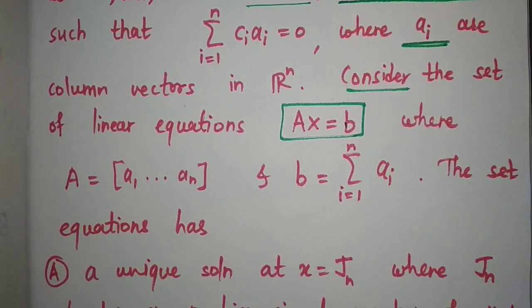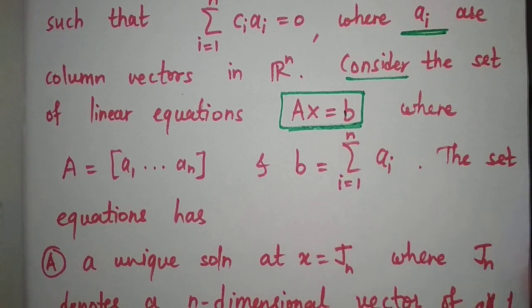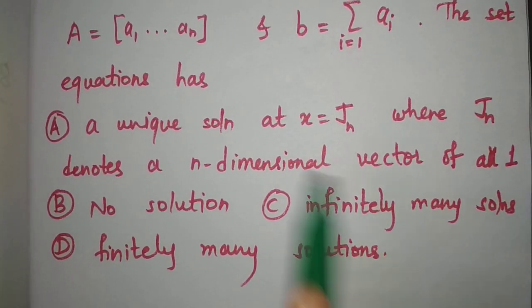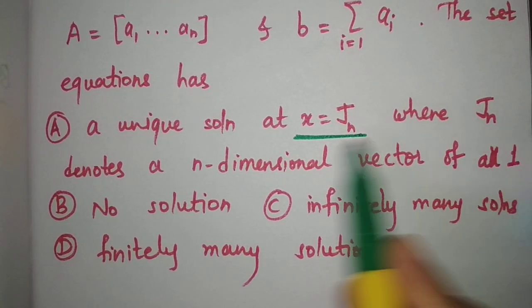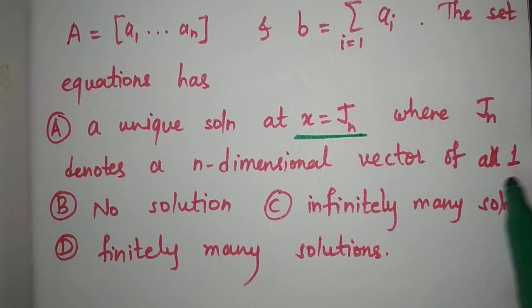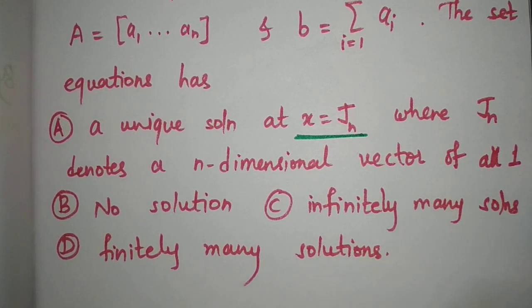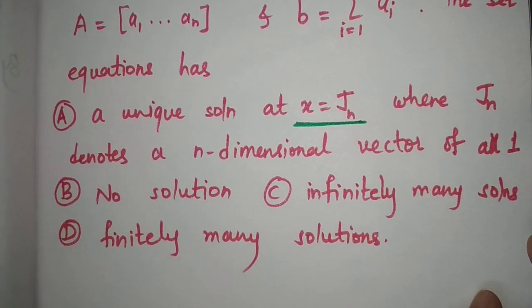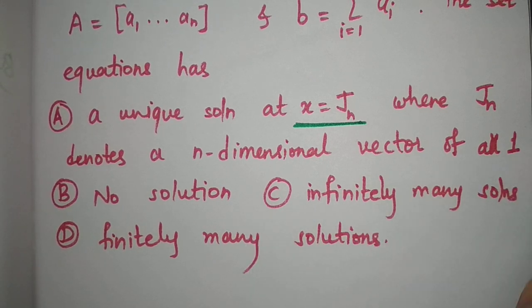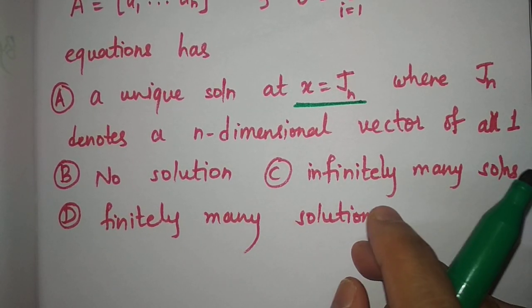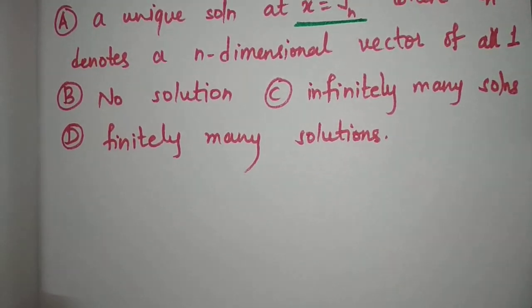Then the system Ax = b has: option A, a unique solution — specifically x = Jn, where Jn denotes the n-dimensional vector of all 1s; option B, no solution; option C, infinitely many solutions; and option D, finitely many solutions.